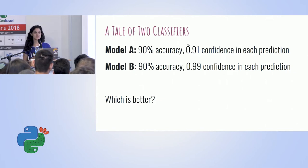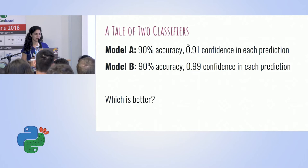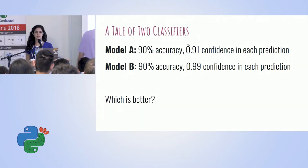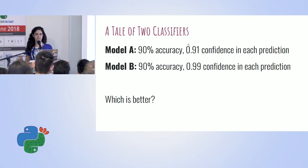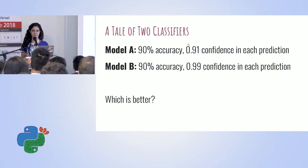By a show of hands, who thinks that model A is better? And who thinks that model B is better? It was about half and half. I want to argue that model A is better, and the reason for that is that its error self-assessment is better than that of model B. Model A thinks it's going to be correct about 91% of the time, and indeed it is correct about 90% of the time. Model B is just overconfident — it thinks it's going to be correct about 99% of the time, but it's correct about 90% of the time.